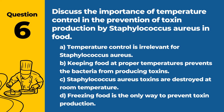Question 6. Discuss the importance of temperature control in the prevention of toxin production by Staphylococcus aureus in food. a. Temperature control is irrelevant for Staphylococcus aureus. b. Keeping food at proper temperatures prevents the bacteria from producing toxins. c. Staphylococcus aureus toxins are destroyed at room temperature. d. Freezing food is the only way to prevent toxin production. Answer: b. Keeping food at proper temperatures prevents the bacteria from producing toxins. Proper temperature control is crucial to inhibit the growth of harmful bacteria and their toxins.